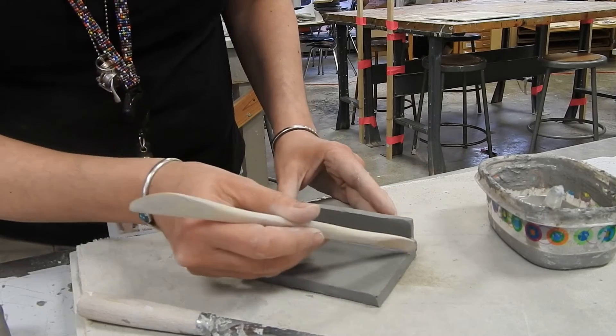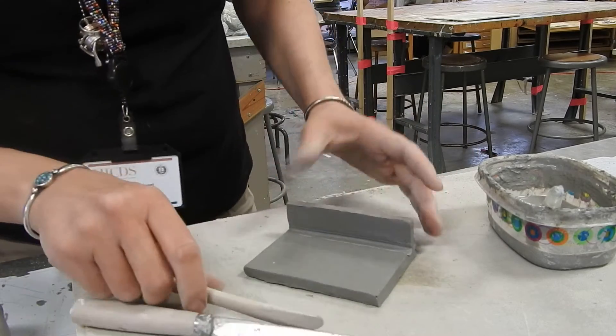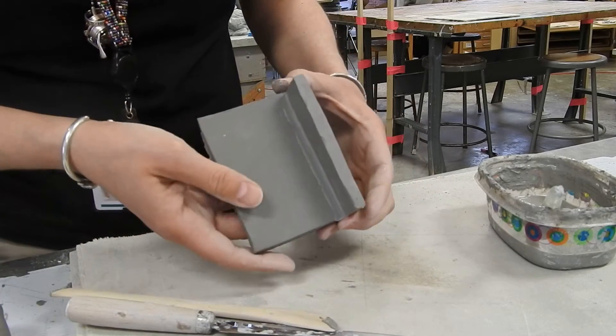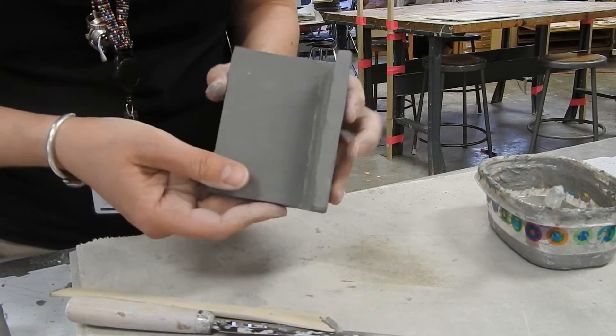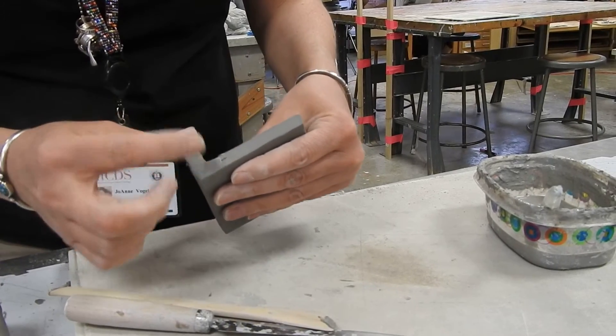If you need extra support, you can slip and score a small coil inside a joint like that. But you can see how that attaches nice and smooth. You can even blend on the edges here.